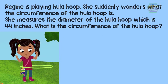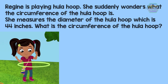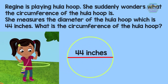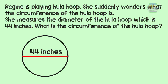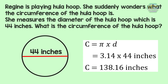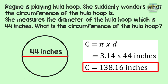Now let's have another example. Regine is playing with a hula hoop and wonders what its circumference is. She measures the diameter of the hula hoop, which is 44 inches. Let's help Regine find the circumference. The given is a diameter of 44 inches. Using the formula C = πd: C = 3.14 × 44 = 138.16. Therefore, the circumference of the hula hoop is 138.16 inches. Good job — you helped Regine find the circumference of her hula hoop!